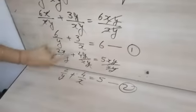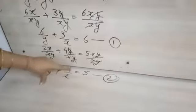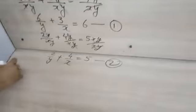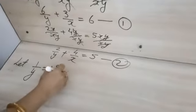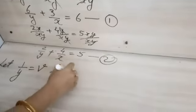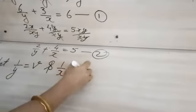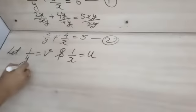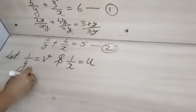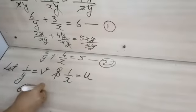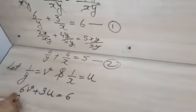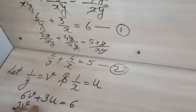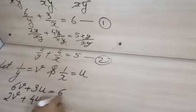See, in denominator it is 1 upon y here also, and here also 1 upon x and 1 upon x. So we will assume, let 1 upon y is equal to v and 1 upon x is equal to u. Now we will substitute this in the equations. It will become 6v plus 3u is equal to 6, and 2v plus 4u is equal to 5.